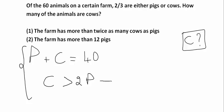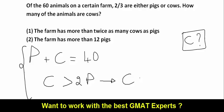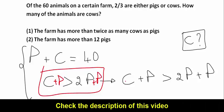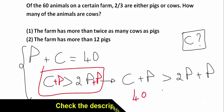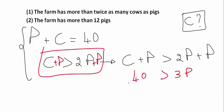I'm going to add P from either side. So it's C plus P greater than 2P plus P. So I took this inequality here and I added plus P from both sides. So C plus P I know that it's equal to 40. So I can replace it by 40. It's greater than 3P. So I know now that 3P is less than 40. So P is less than 40 divided by 3.